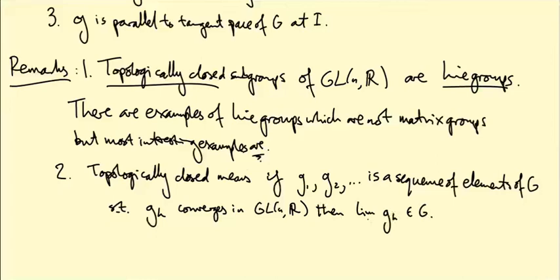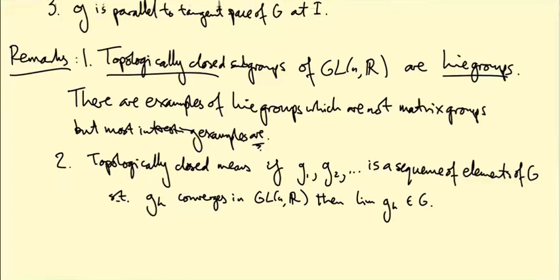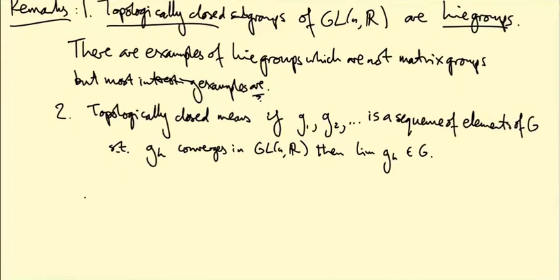Right, so if it's matrices all in G, they have a limit, then the limit is in G as well. That's the assumption. Let me just give you an example of something that's not topologically closed.